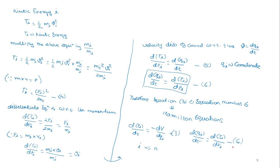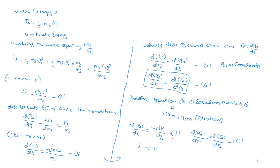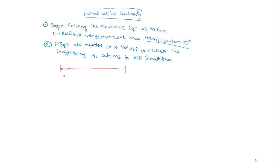Using these two Hamiltonian equations, by solving them at every time step in your simulation, you would be able to generate a trajectory of atoms that will move in your MD simulation. This is what you want to do — if this is the time frame of your simulation with a small time step of one femtosecond, every time your system moves from one time step to the next, you solve this Hamiltonian equation to find where your atom is in the next time step.